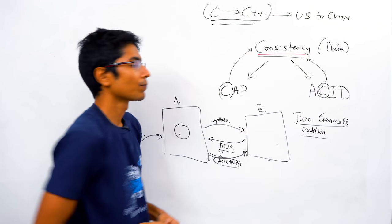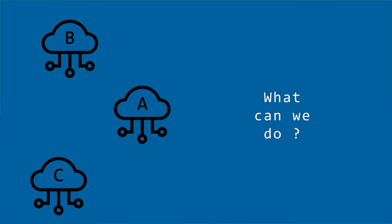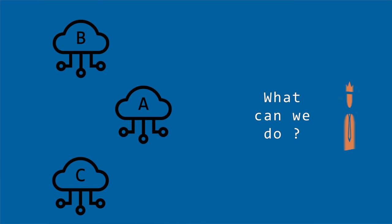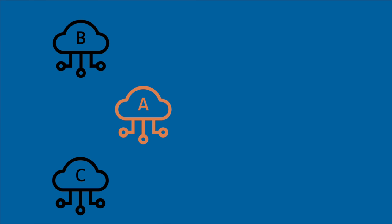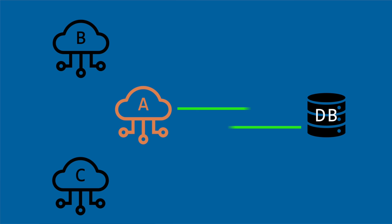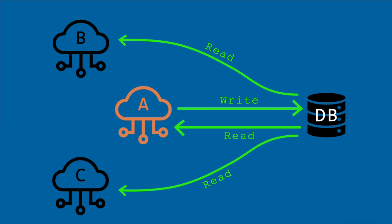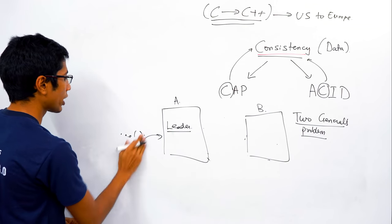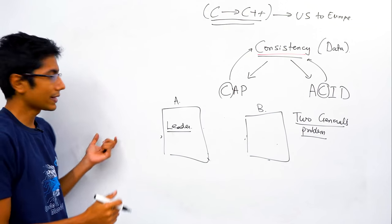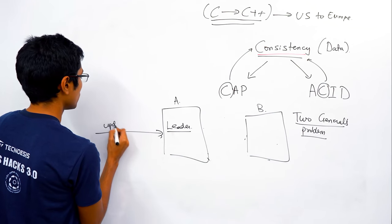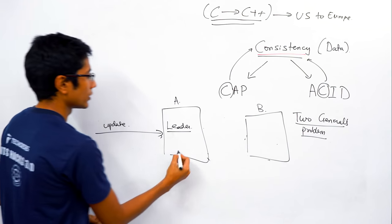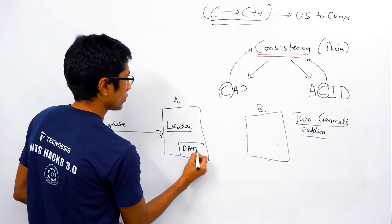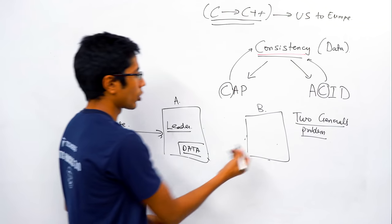What can we do? We can give one server a special leader role. Make the US server the leader — the only one that can commit, the only one that can do writes on the database. This simplifies things. If you send an update, you send it only to the leader, which makes the change locally and commits.